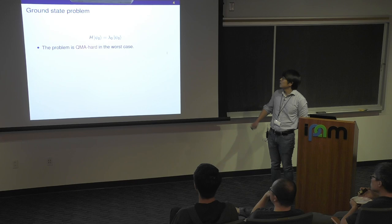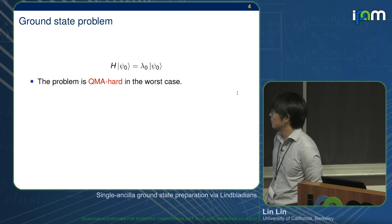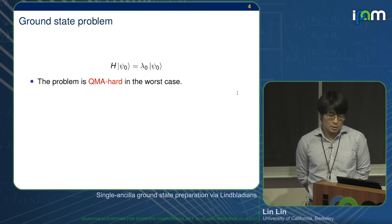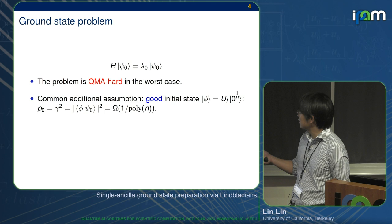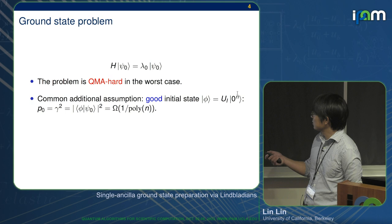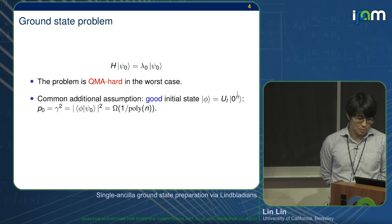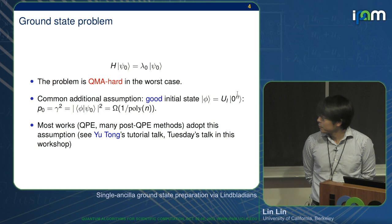We would like to address one question in this paper: how to prepare a ground state with zero initial overlap. The setup is you are given the Hamiltonian H, and you want to find the eigenvector Psi zero and eigenvalue Lambda zero. Getting either of them is QMA hard in the worst case, so you need some assumptions. The most common additional assumption is you have a good initial state, meaning a UI that is not too long.